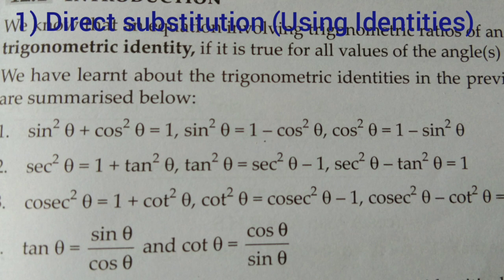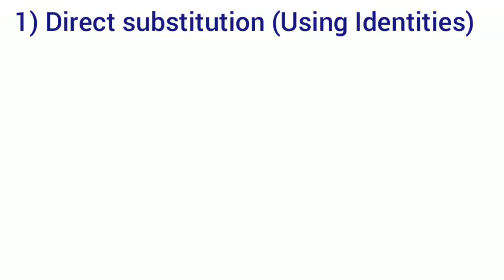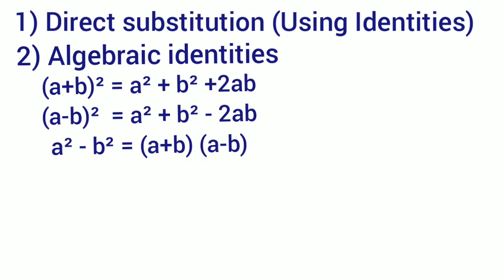A question. Direct substitution — you can substitute using the formula. Algebraic identities: A plus B whole square formula, A square minus B square, A minus B whole square formula, and A plus B into A minus B. These are the algebraic identities formulas. Okay?